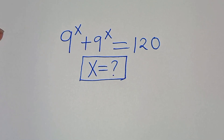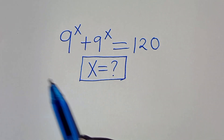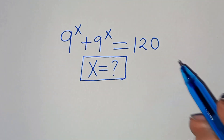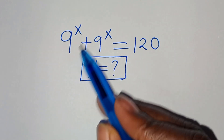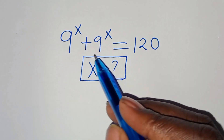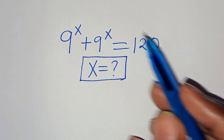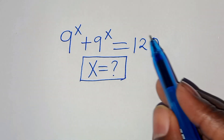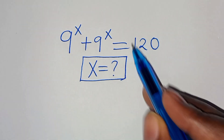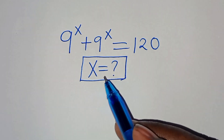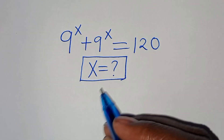Hello everyone, you are welcome to solve this nice exponential equation which is 9 to the power of x plus 9 to the power of x. This is equal to 120. So what is the value of x?